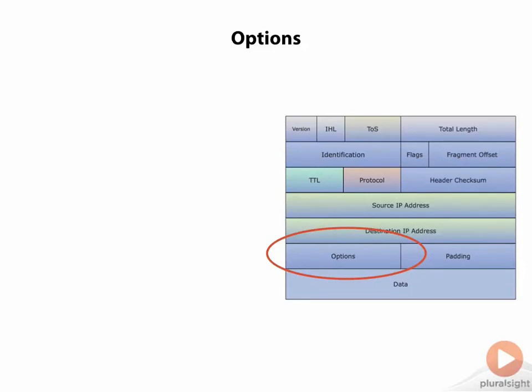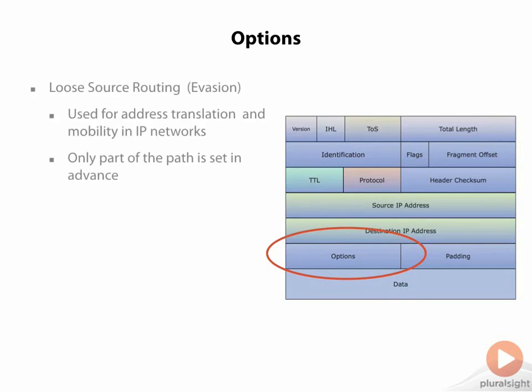The next field here to look at is the options field, which is a field that's not used very often in IPv4, but it is used to indicate that something a little bit different is happening — like one example of loose source routing.